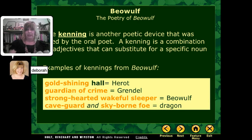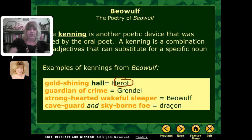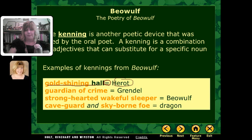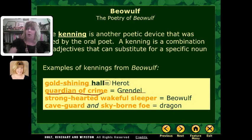Another literary device very common in Old English is the idea of a kenning. A kenning is a poetic device that is a combination of adjectives that can take the place of a specific noun. So instead of saying someone's name, you give two or three adjectives together that describe them. Instead of saying Beowulf went to Herot, they say he went to that gold-shining hall — 'gold-shining hall' is the same thing as Herot, just two different ways of saying it. Instead of saying Grendel came and was a monster, it says the guardian of crime walked through the door.